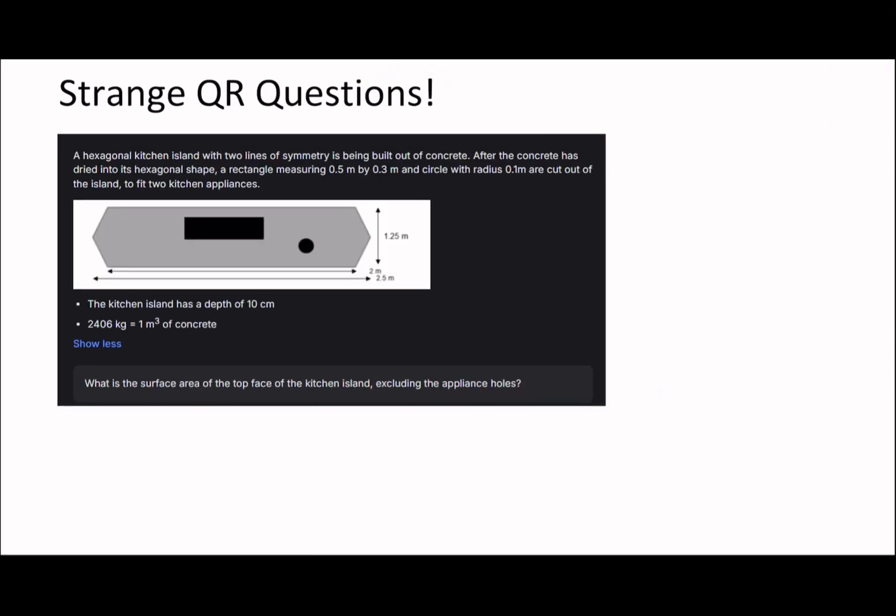With this question, there's kind of two ways to do this. It says, what's the surface area of the top face of the kitchen island, excluding the appliance holes? You can see, you've got to calculate this hexagonal area and then subtract the black rectangle and the black circle. So I would first start by doing the main area. I've divided it into a rectangle and then two adjacent smaller triangles, which I think is the best way to do it. So that's just 2 times 1.25, which is 2.5m.